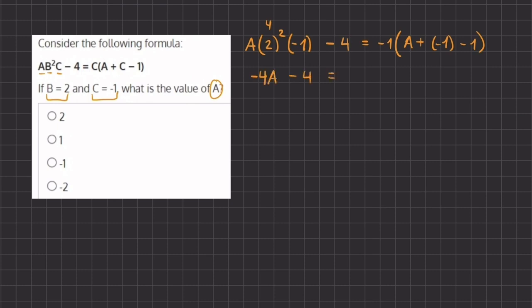And here, let's simplify what's inside the parentheses. We have A and negative 1 minus 1 gives us a negative 2.